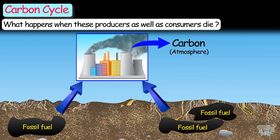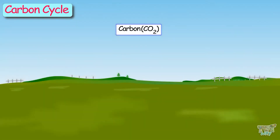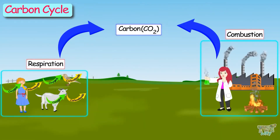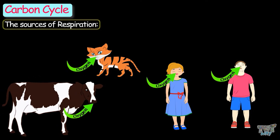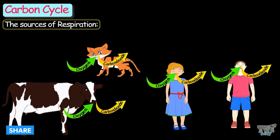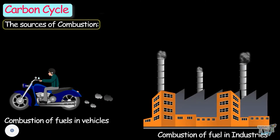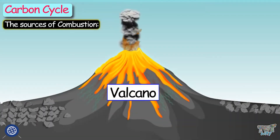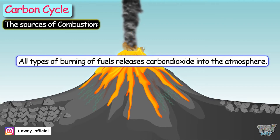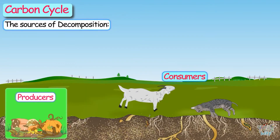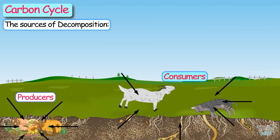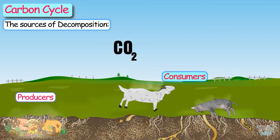This is how carbon dioxide circulates in the atmosphere. Carbon enters the atmosphere through respiration, combustion, and decomposition. Sources of respiration are all the consumers — they take in oxygen and release carbon dioxide. Sources of combustion are combustion of fuels in vehicles, in industry, forest fires, volcanoes, and all types of burning. The dead remains of plants and animals decomposed by decomposers convert carbon into carbon dioxide and release it into the atmosphere.